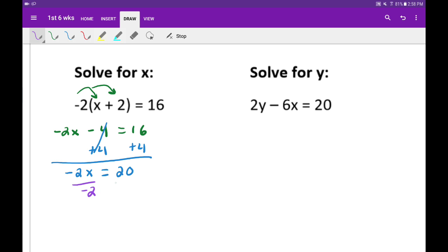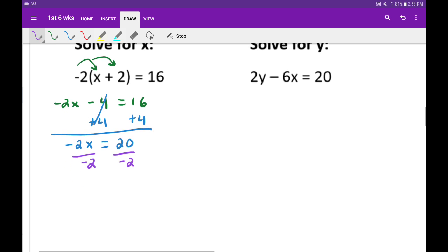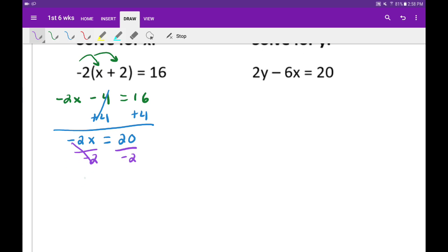Alright, divide the negative 2. Negative 2 divide out and we get negative 10. So that's one way to do it.